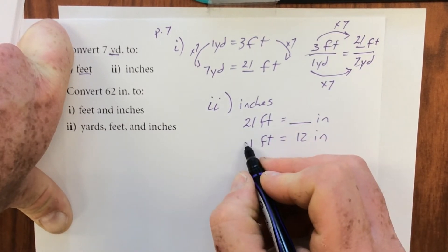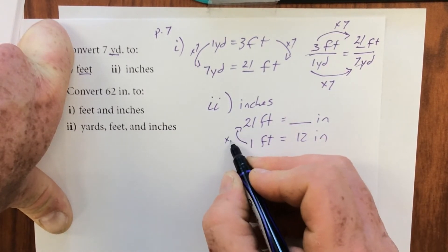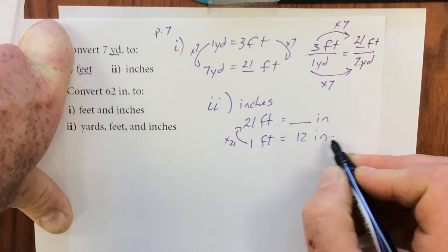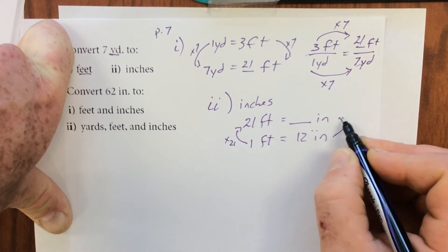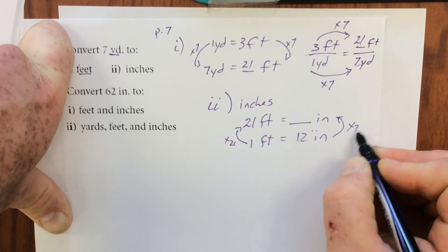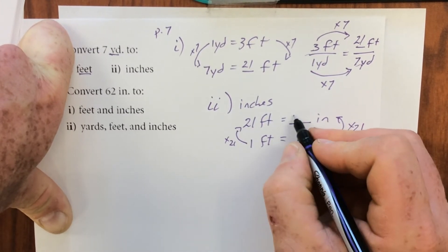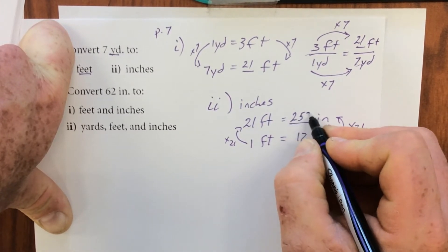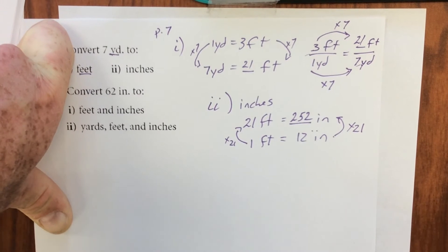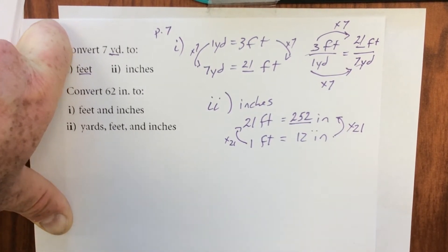How do we get from one foot to 21? We multiply it by 21. So we're going to take the 12 inches and multiply it by 21, which gives us 252 inches. And that's it to part one and two.